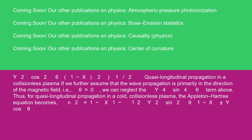Quasi-longitudinal propagation in a collisionless plasma: If we further assume that the wave propagation is primarily in the direction of the magnetic field, i.e., θ ≈ 0, we can neglect the y⁴ sin⁴θ term above. Thus, for quasi-longitudinal propagation in a cold, collisionless plasma, the Appleton-Hartree equation becomes: n² = (1 - x) / (1 - (1/2)y² sin²θ / (1 - x) ± y cosθ).